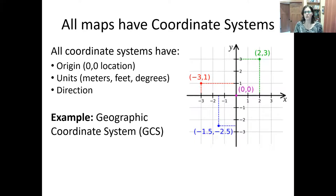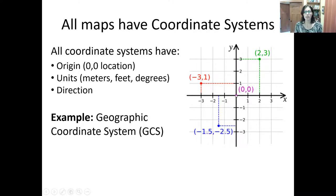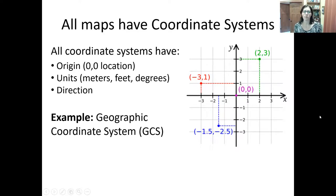Any time you have a map — any time you go from a spheroidal object onto a flat surface — all maps are going to have some sort of coordinate system. That coordinate system will have an origin, basically a zero-zero point somewhere on the Earth. It's going to have units; the ones we see most often are meters or decimal degrees, and occasionally feet. It will also have a direction in which we're counting, with two main directions such as north and east.